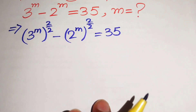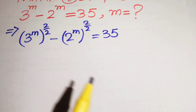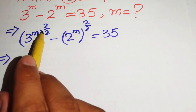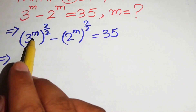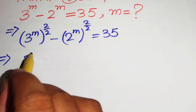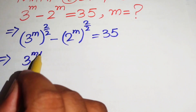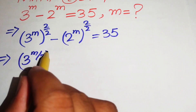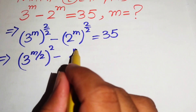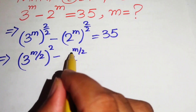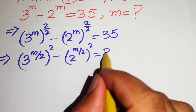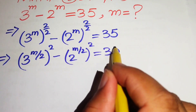In the next step we use the exponential law, multiplying the 1 over 2 into the exponent, and we write it as 3 to the power of m over 2, whole squared, minus 2 to the power of m over 2, whole squared, equals 35.